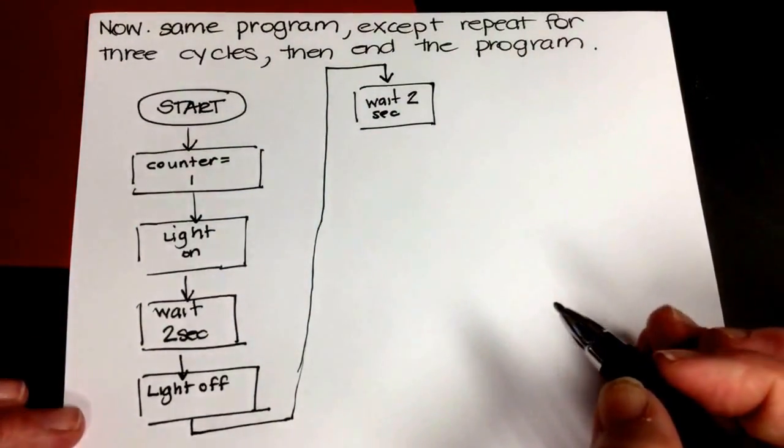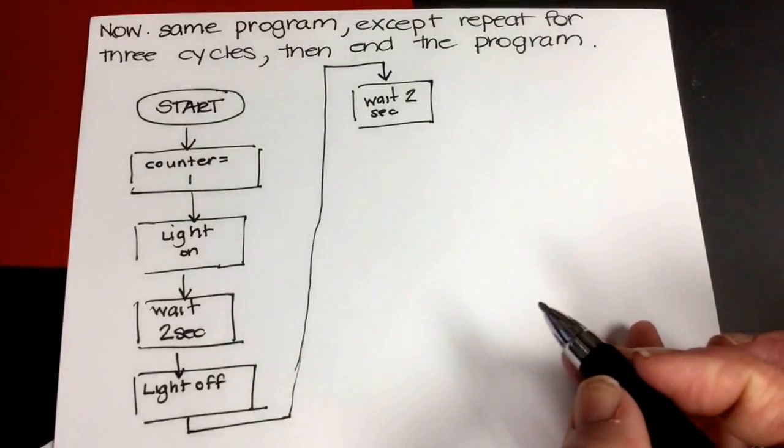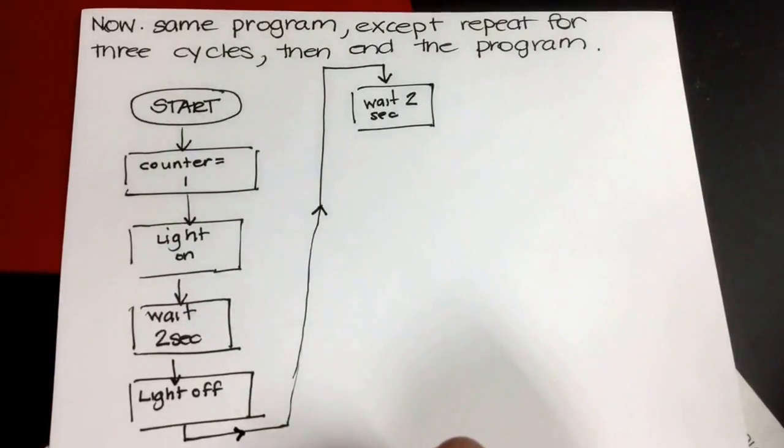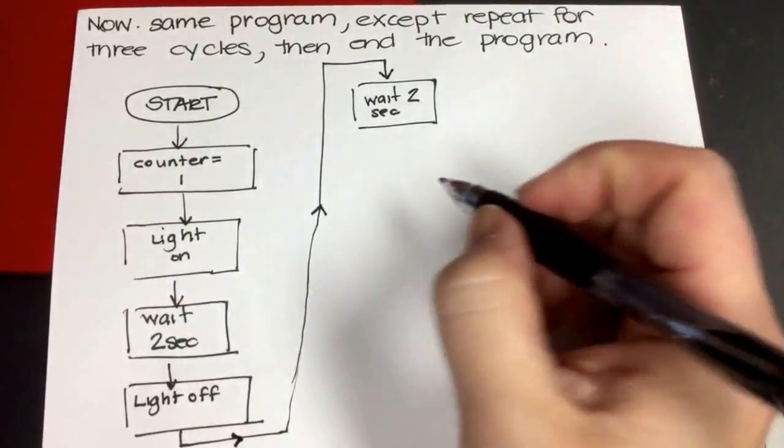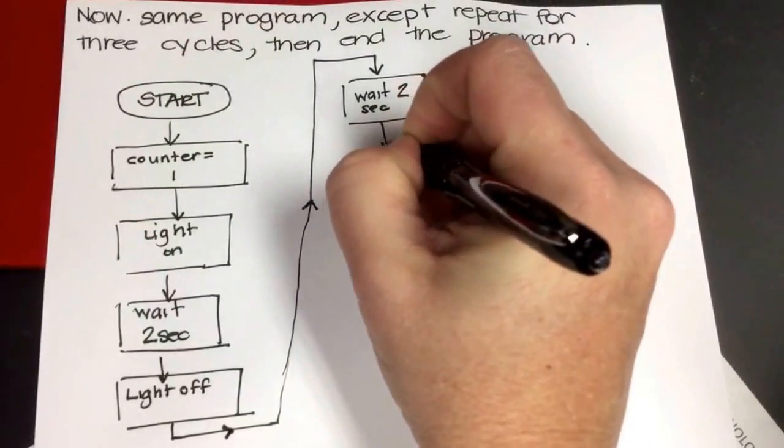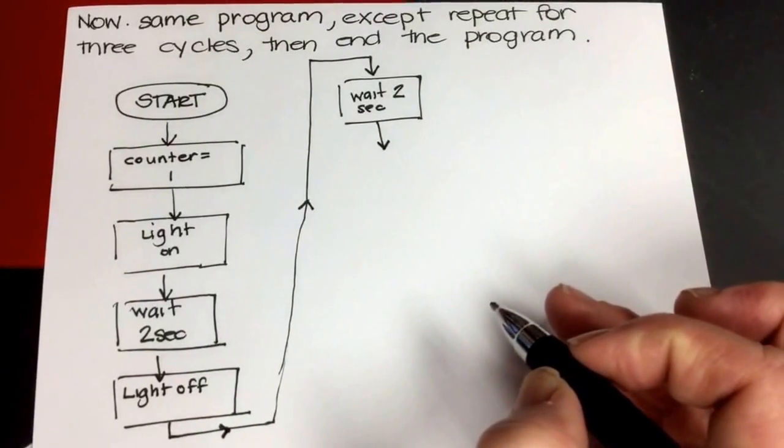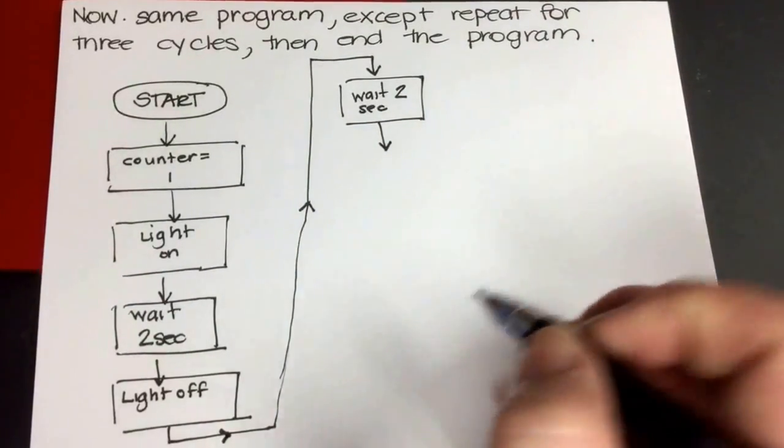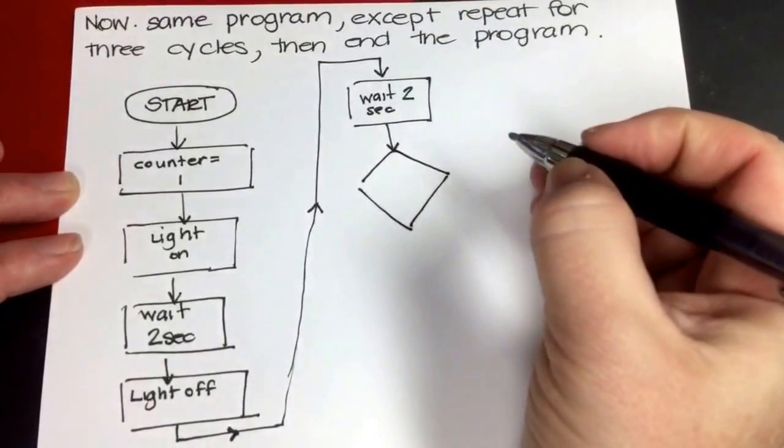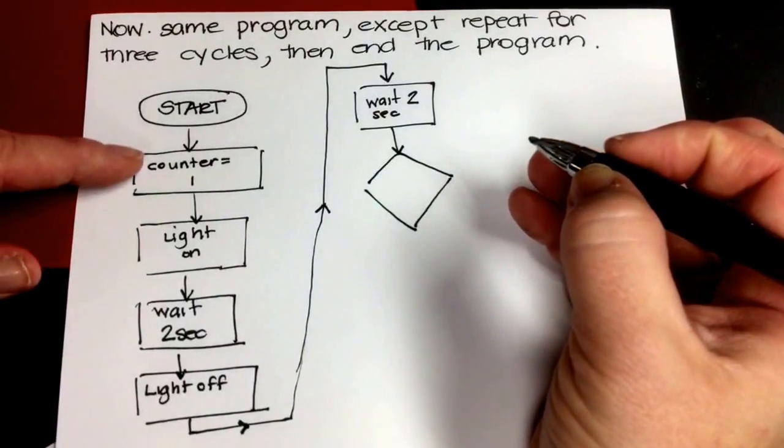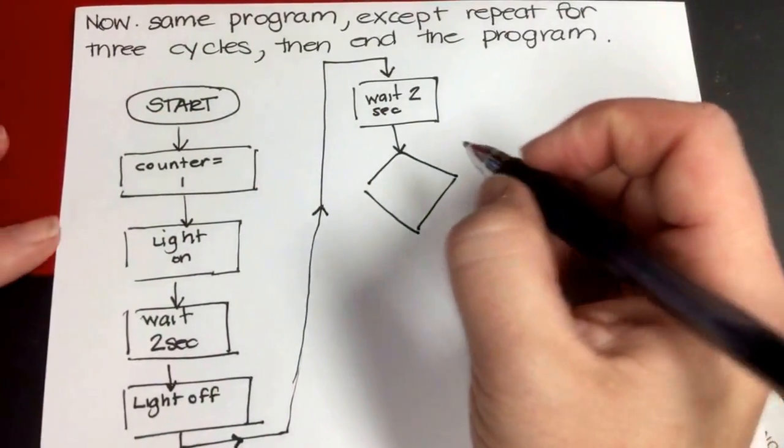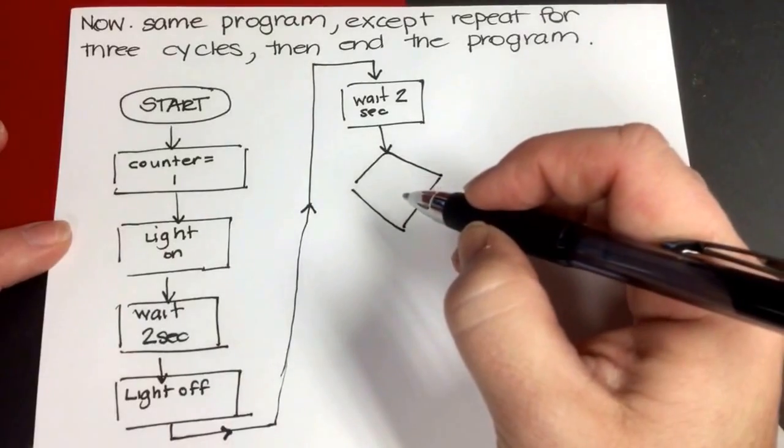And now I need to keep track and make a decision. Have I run this three cycles yet? Or do I need to keep going? And I'm going to just add some little arrowheads here so you can tell which way that's going. So I need a decision box. And remember that a decision box is this kind of diamond shape, and we always ask a yes-no question. So I can't ask it, how many cycles have I run? That's not a yes-no question. So I need a yes-no question. I'm going to say, is the counter equal to three? I haven't made any way to increment the counter yet.